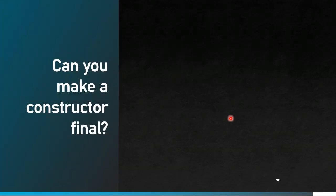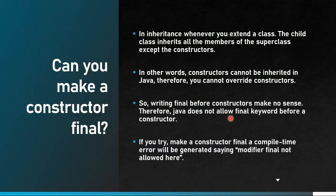Can you make a constructor final? This is a tricky interview question. Final means we cannot subclass it, cannot override a final method, and final variables are constants. Coming to constructors — overriding comes into picture when we extend a class, but constructors don't get inherited. So even if you write final, it is of no use. Java will not allow a final keyword with a constructor — it is a compile-time error: 'modifier final not allowed'.